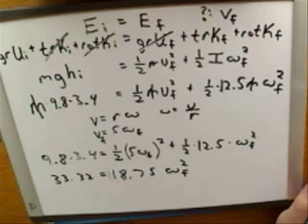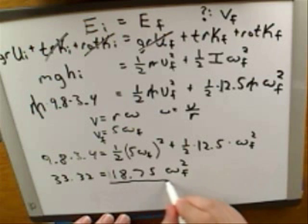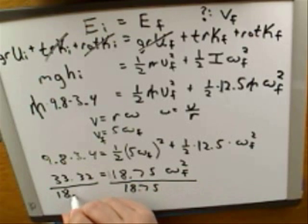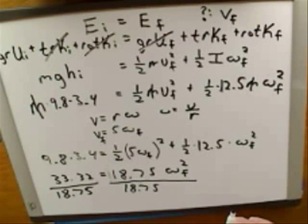Divide 33.2 by the 18.75. Yeah. We're dividing both sides by 18.75. So let me know what you get there. 1.777. Okay, good.